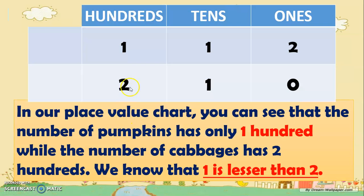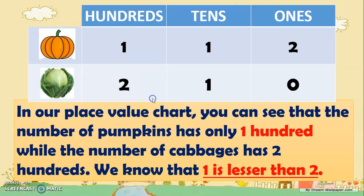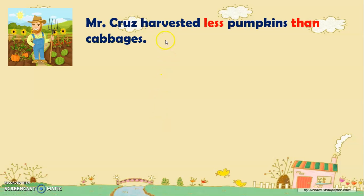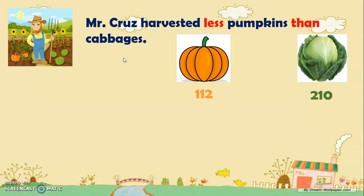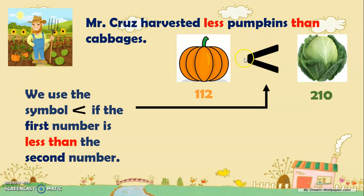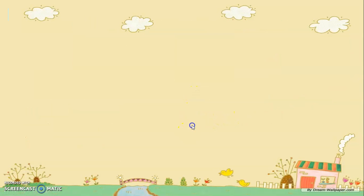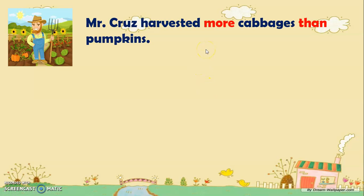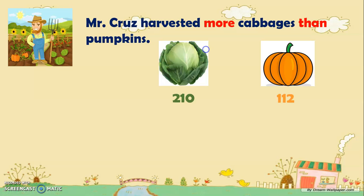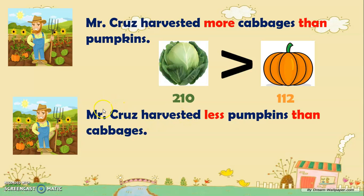Now in our place value chart, the number of pumpkins has only one hundred while the number of cabbages has two hundreds. We know that one is lesser than two. Mr. Cruz harvested less pumpkins than cabbages. So we have 112 pumpkins and 210 cabbages, and we use the symbol less than. We use the less than symbol if the first number is less than the second number. So 112 pumpkins are less than 210 cabbages.